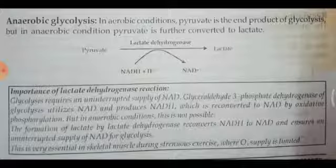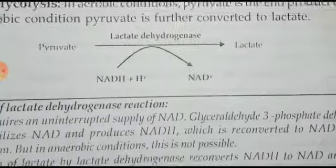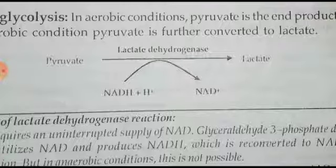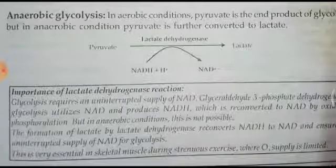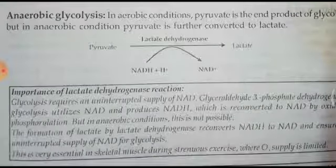In aerobic conditions, pyruvate is the end product of glycolysis, but in anaerobic conditions — when there is no oxygen or less oxygen — pyruvate is further converted to lactate. NADH is converted to NAD⁺ in the presence of enzyme lactate dehydrogenase. This anaerobic pathway is not energy efficient because the NADH produced in glycolysis is consumed for lactate production, so there is no sufficient energy production in anaerobic glycolysis.